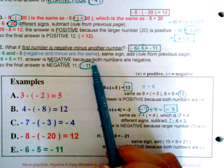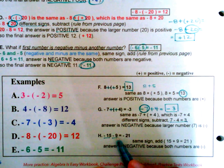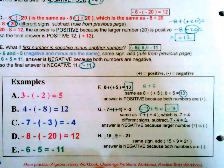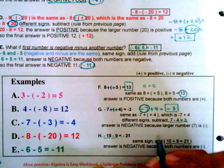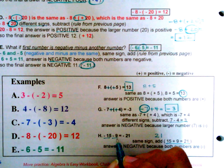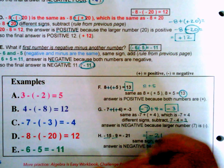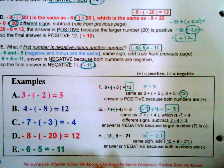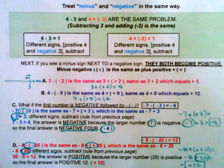H: negative fifteen minus nine. This is similar to example E — both the same sign, negative fifteen and negative nine. We add them: fifteen plus nine is twenty-four, and because we're adding two negative numbers they make a larger negative number, so the answer is negative twenty-four. Let's keep going and take a look at practice problems.